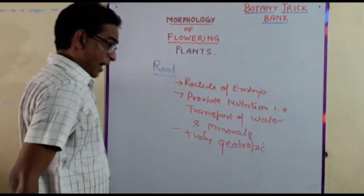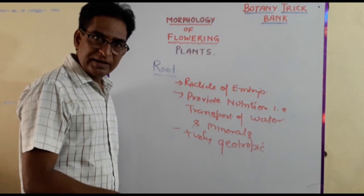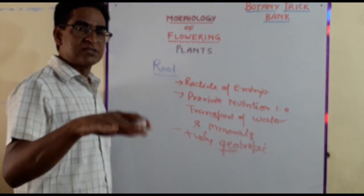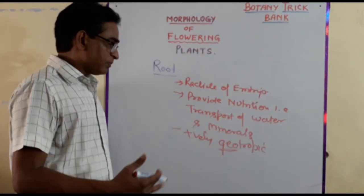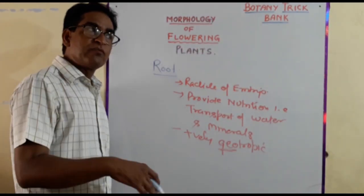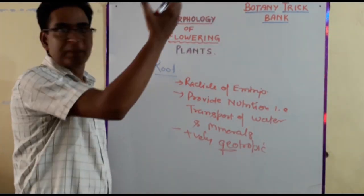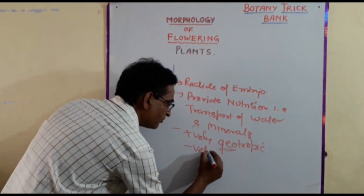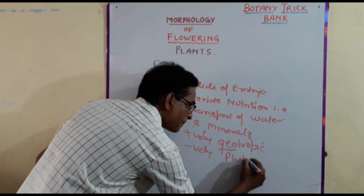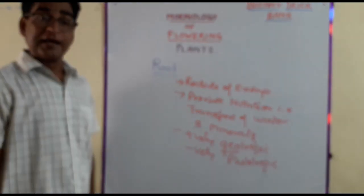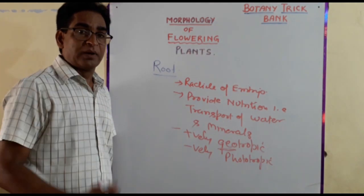Since the development of root is inside the soil, it is away from the light — away from the sun — and that is why it is called negatively phototropic. It also provides anchoring to the plant.